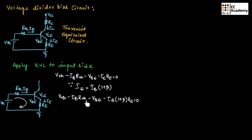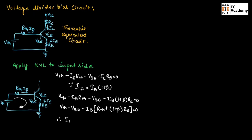Taking Ib common from those terms: Vth − Vbe − Ib·[Rth + (1 + beta)·Re] = 0. Therefore, the expression for input current is: Ib = (Vth − Vbe) / (Rth + (1 + beta)·Re).